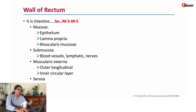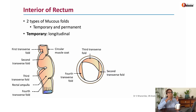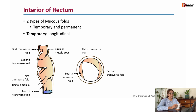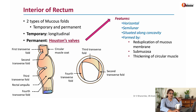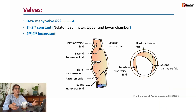Let's talk about the mucosa first. The rectum shows mucosal folds — both temporary and permanent. Temporary ones are longitudinal folds, which are lost in the presence of fecal matter. Permanent horizontal folds are called Houston's valves. Each Houston's valve is a horizontal semilunar fold containing mucous membrane, underlying submucosa, and a bit of circular muscle. There are four in total: the first and third are constant; the second and fourth are comparatively inconstant.